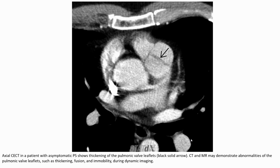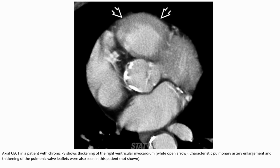The CT of a patient with asymptomatic pulmonary stenosis demonstrates thickening of the pulmonary valve outlet. CT of the pulmonary valve may demonstrate thickening of the pulmonary valve leaflets and immobility during dynamic imaging. The CT image shows thickening of the right ventricular myocardium, characteristic pulmonary artery enlargement, and thickening of the pulmonary valve outlet.